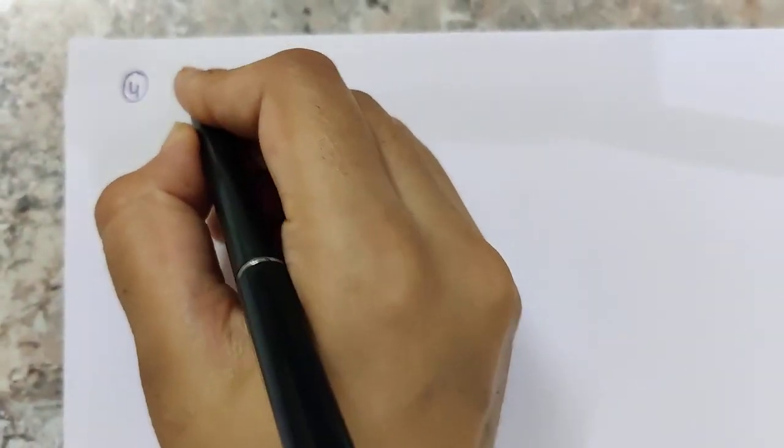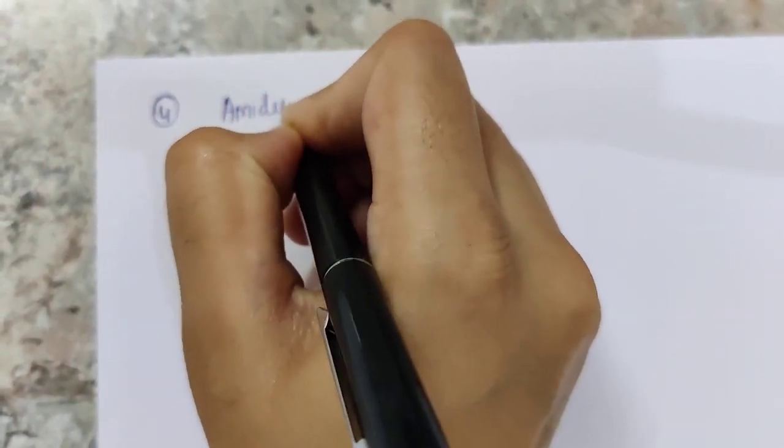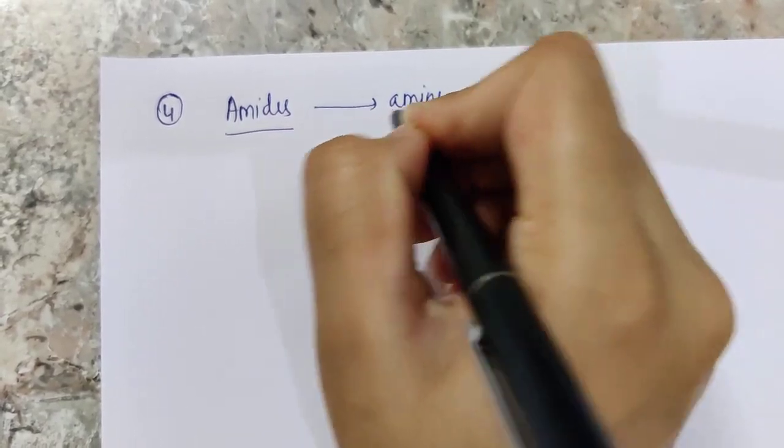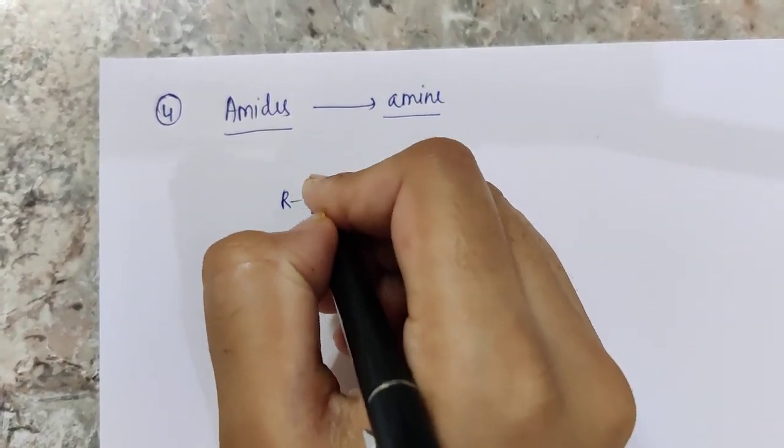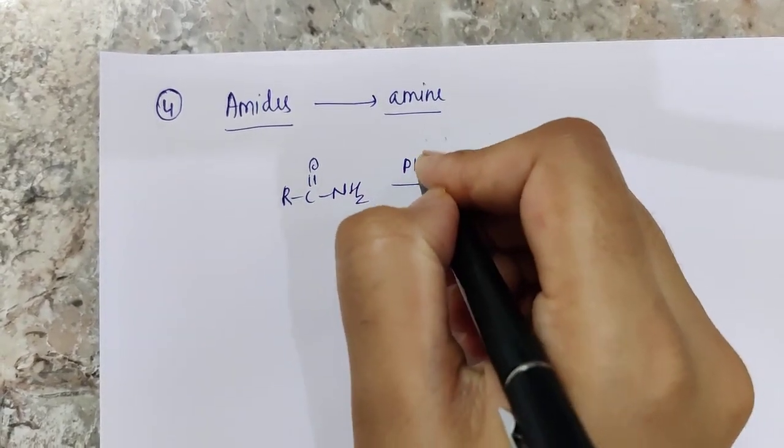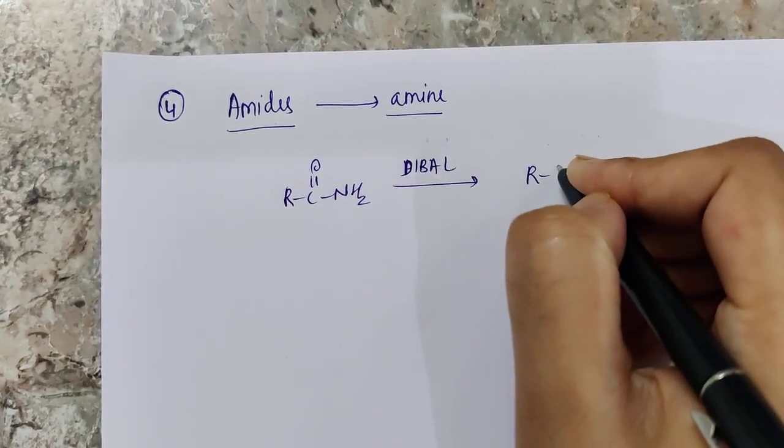Fourth is amides. Amides. Amides are reduced to amines as was the case in lithium aluminum hydride. Amides are reduced by DIBAL into amines.